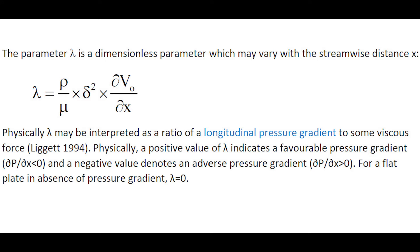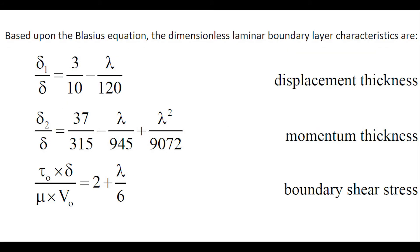In this solution, the parameter lambda is a dimensionless parameter which may vary with the streamwise distance x. Physically, lambda may be interpreted as a ratio of a longitudinal pressure gradient to some viscous force. A positive value of lambda indicates a favorable pressure gradient dp/dx negative, while a negative value denotes an adverse pressure gradient dp/dx greater than 0. And for a flat plate in absence of pressure gradient, lambda equals 0.